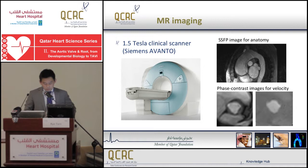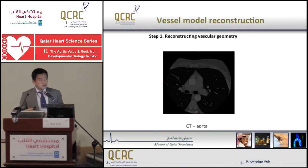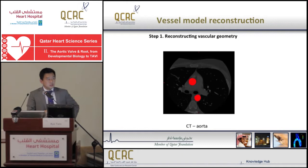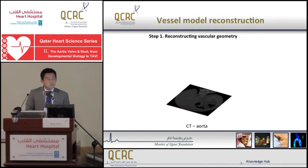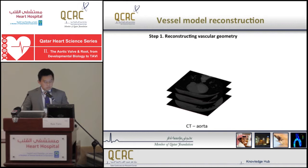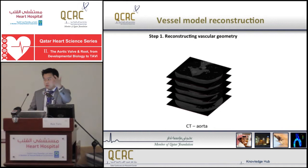To reconstruct three-dimensional geometry from these images, we segment out the aorta area. This is an example CT image cutting through the chest — although this is CT, the working principle is the same for MR or other image types. We first segment out the aorta area, and by stacking up these outlines, this gives us a nice three-dimensional representation of the aorta.